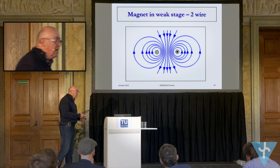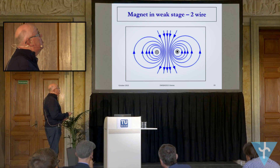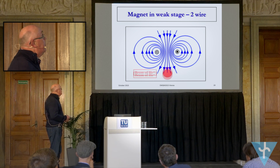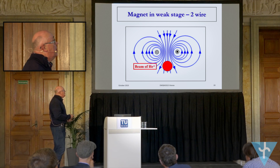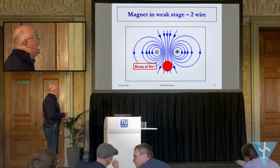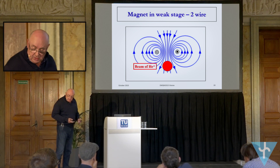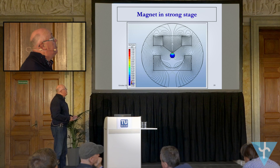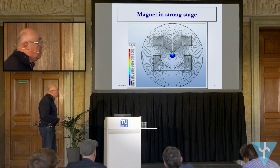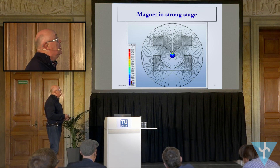Moving on to the weak stage: we want a very controllable but weak magnetic field. What we're going to do is use a simple two-wire system — the beam will run through here, so you get this inhomogeneous field running along here and the beam runs in this space. By measuring the current in this, we can control the value of this field very carefully.